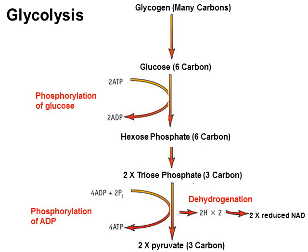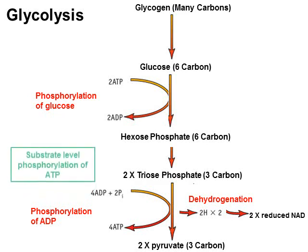Remember OILRIG: oxidation is loss and reduction is gain — we're talking about electrons. So when you're taking a hydrogen atom you're also gaining electrons, reducing the NAD. It's sometimes written as NADH but we'll write it as reduced NAD. Also, do keep an eye on the carbons — some people get lost with how many molecules there are and work out the wrong number of ATPs in exam questions.